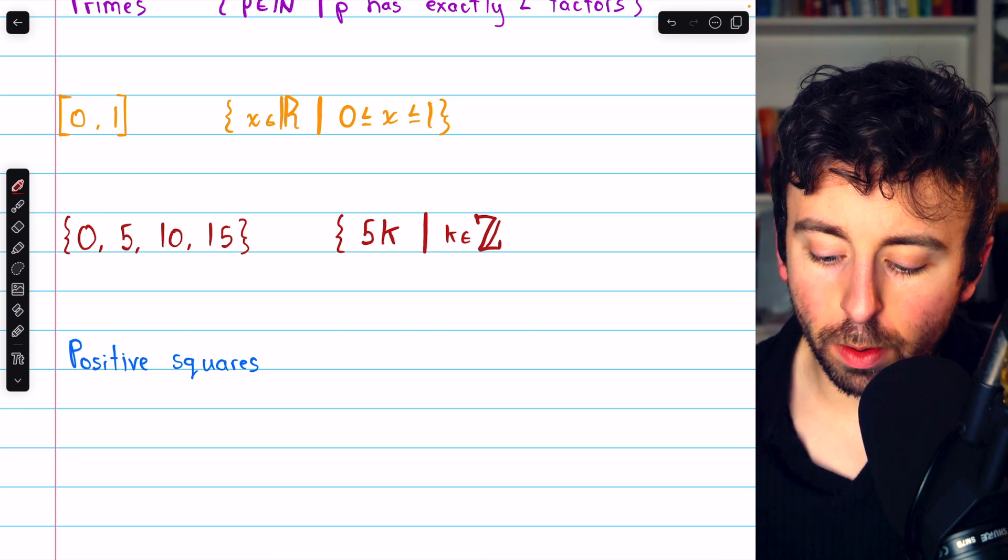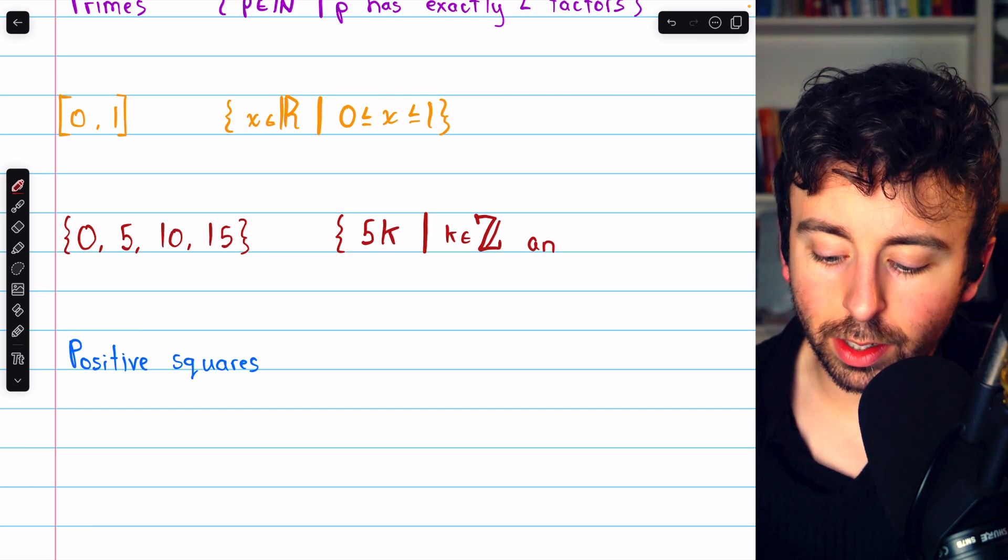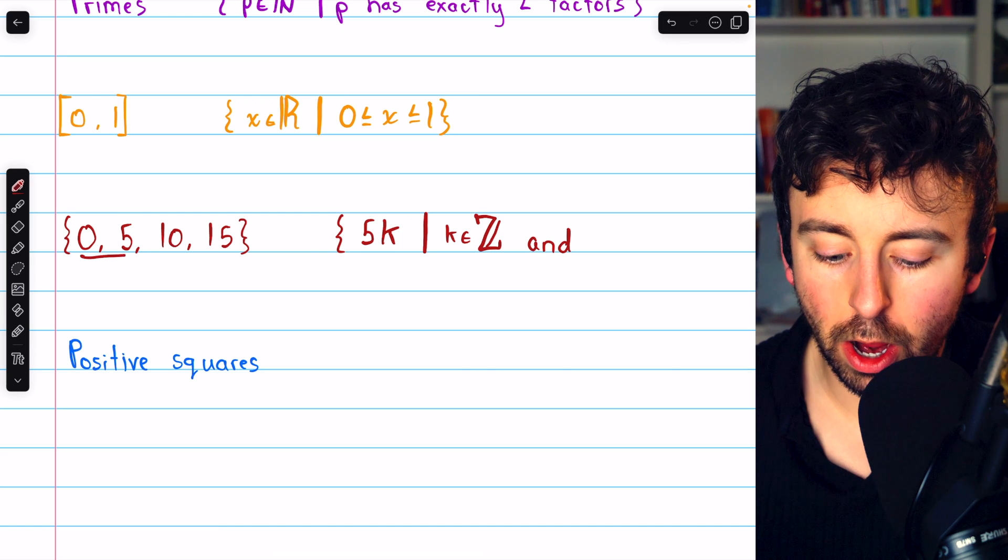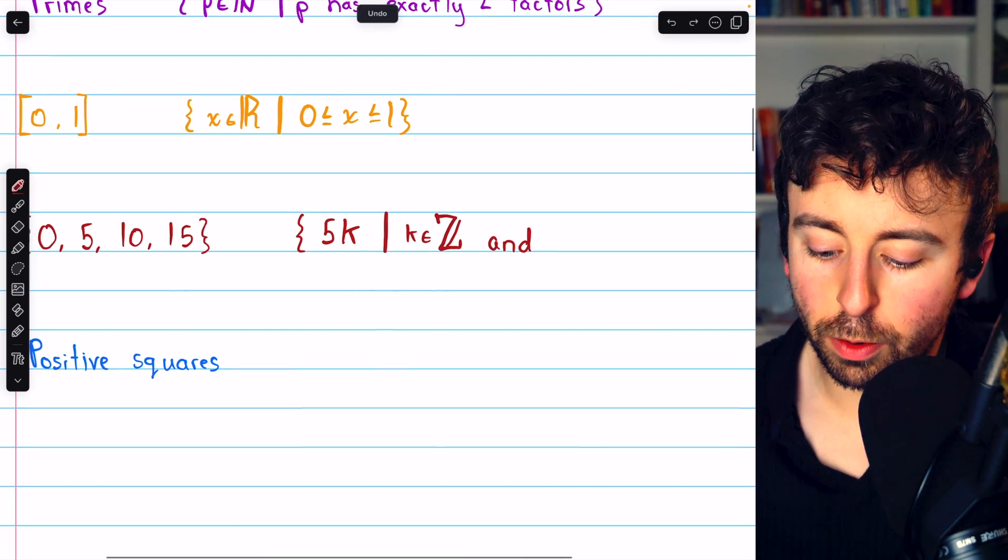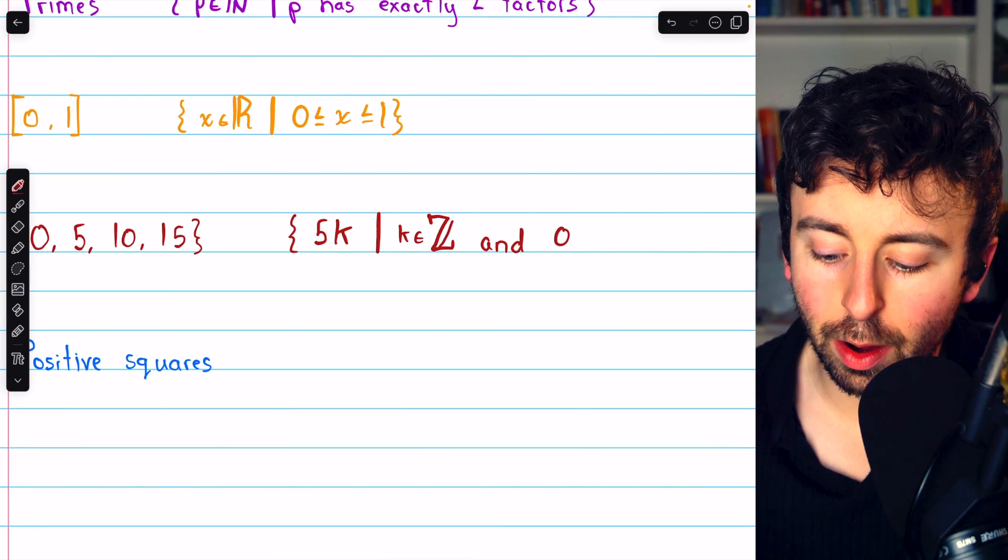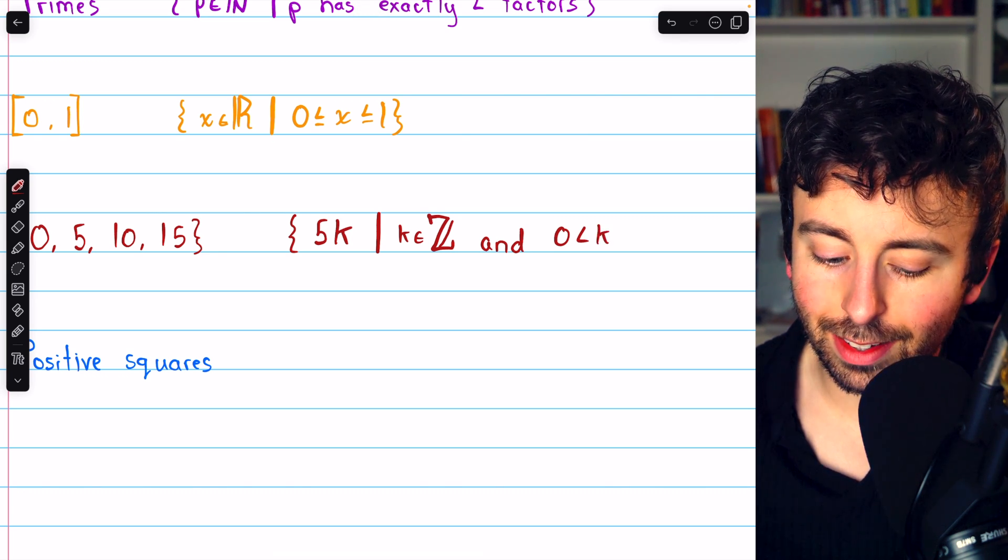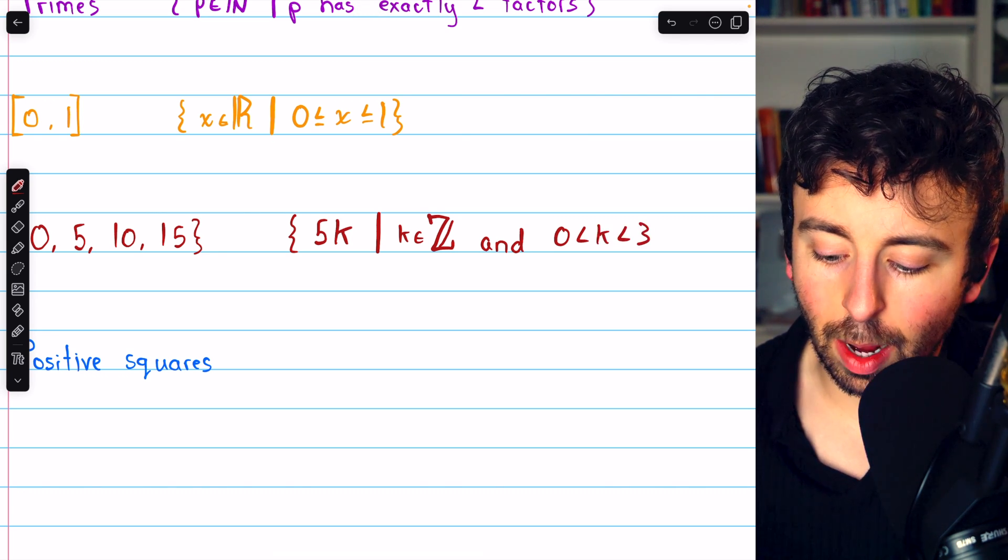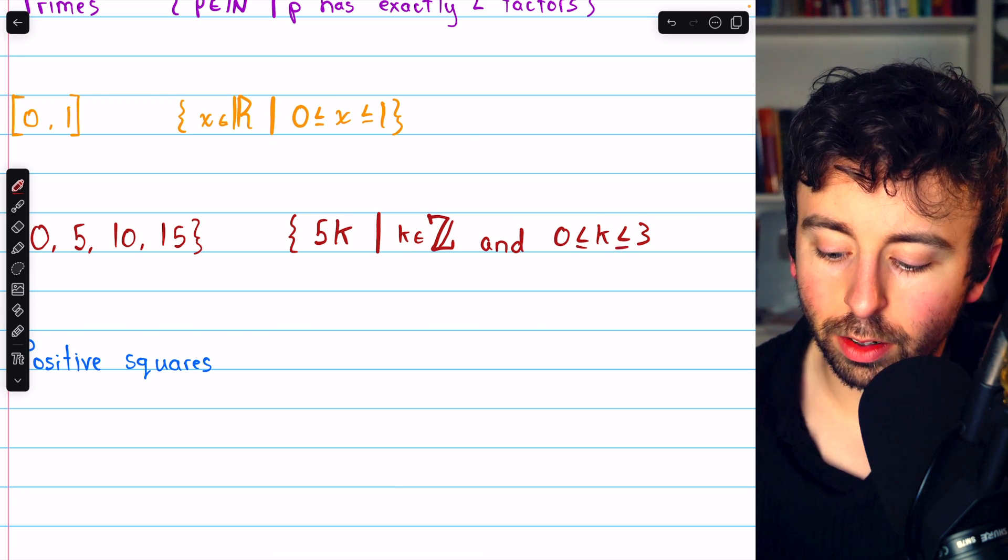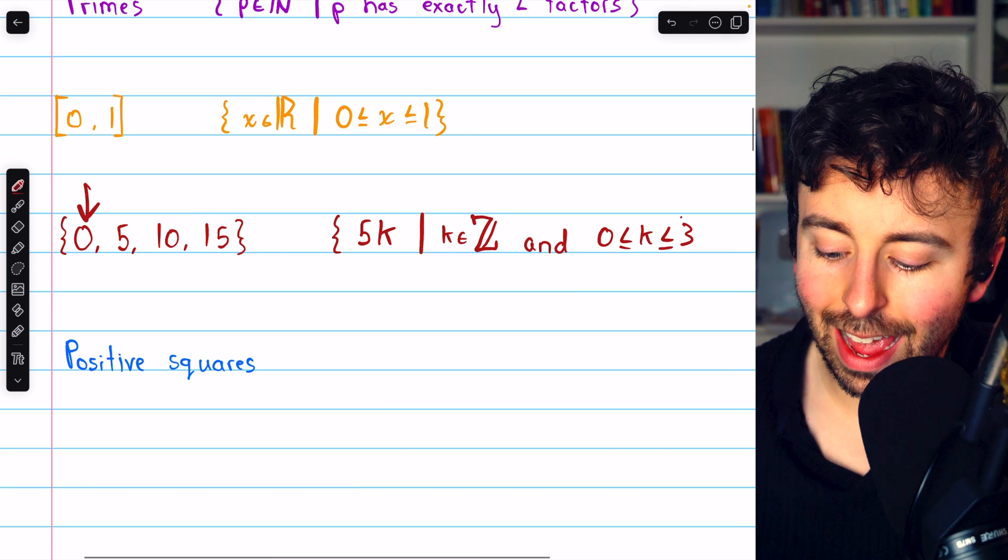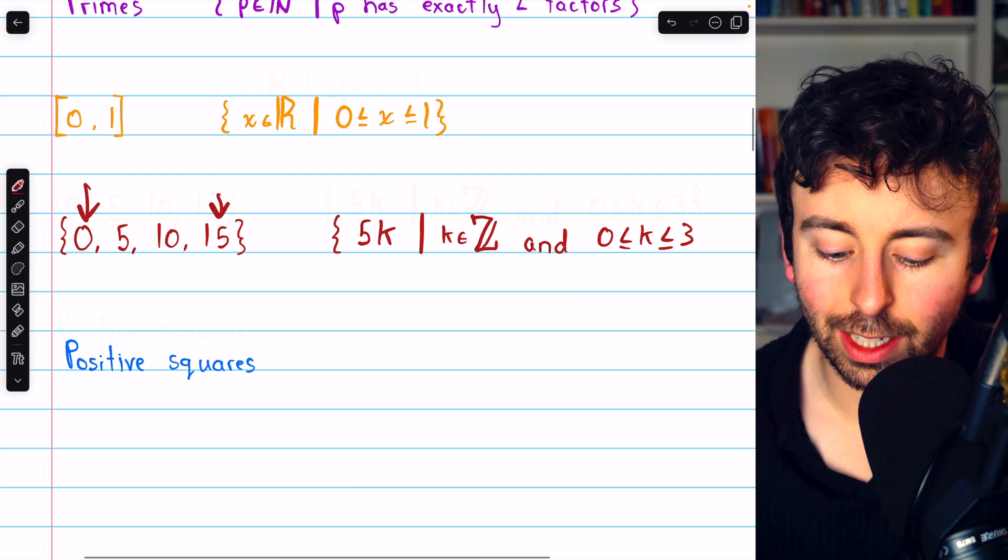But also, we don't want all multiples of 5. We only want a few of them. So k actually has to range from 0 to 3. That's going to produce precisely the multiples of 5 we want. So 0 is less than k is less than 3, except I need to use non-strict inequalities. k could equal 0 to give us that element, and k could equal 3 so we get that element.